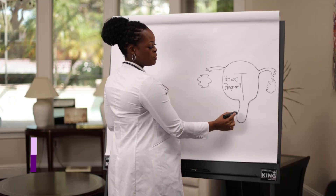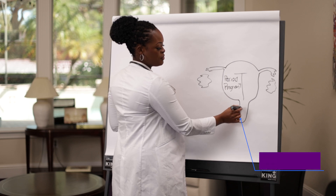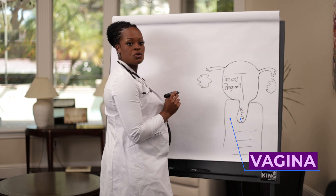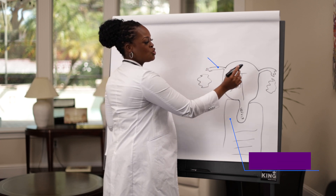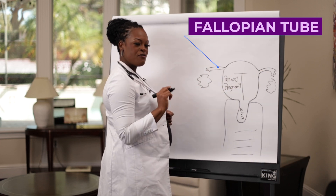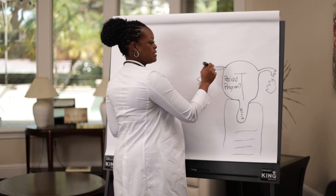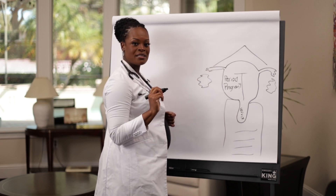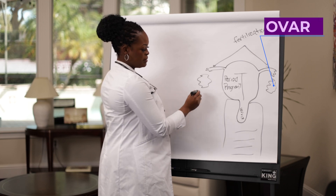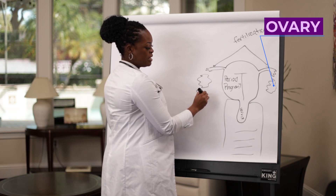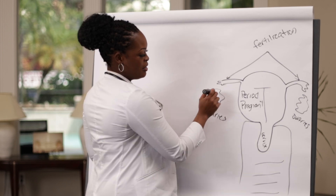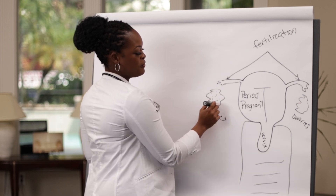The bottom portion of your uterus is the cervix, and surrounding that is your vagina. Connected to your uterus are two fallopian tubes, which are very, very important because this is where fertilization occurs. On the sides here we have two ovaries.